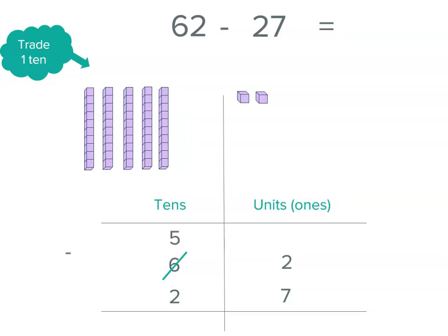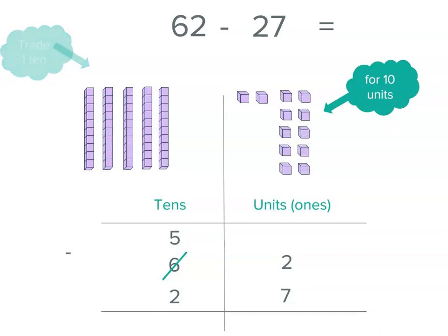So in our tens place, instead of 6, we've got 5, and we're going to put 10 units there. So we don't have 2 units anymore, do we? Instead of 2, we've got 2 plus 10, which is 12. And now we can work out our subtraction.